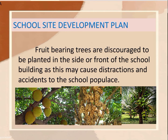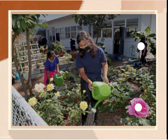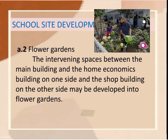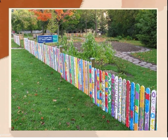Fruit-bearing trees are discouraged to be planted inside or in front of the school building as they may cause distractions and accidents to the school populace. Another area is flower gardens. The intervening space between the main buildings and the home economics building on one side and shop building on the other side may be developed into flower gardens. A decorative mini fence of wood or bamboo may be put up around the flower gardens for protection as well as for better visual effect.